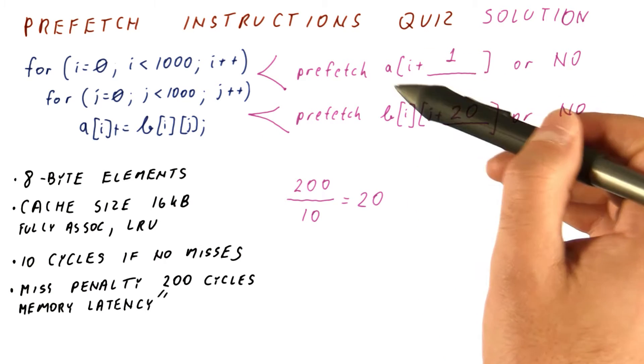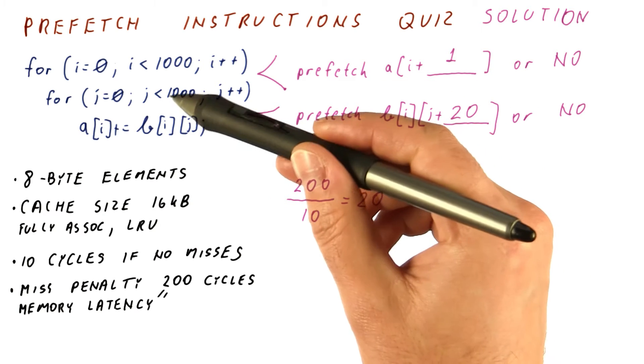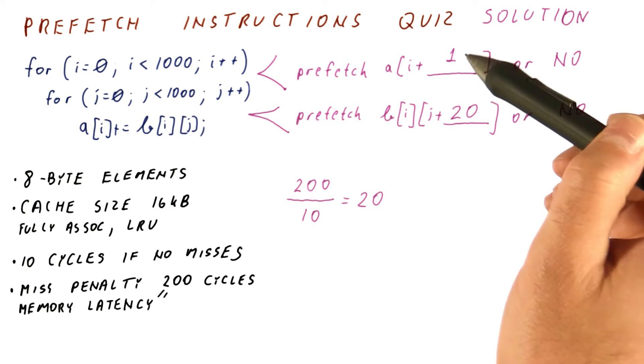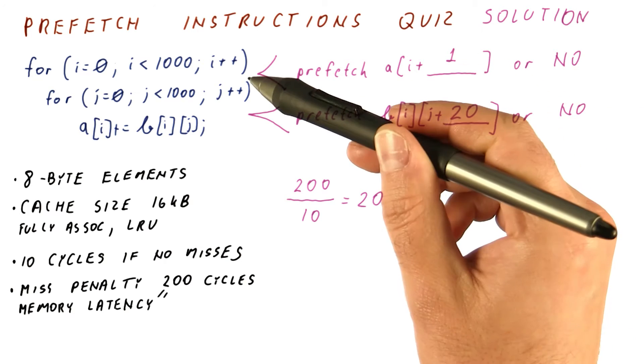If we prefetch with a distance of 1, our prefetch is done after 200 cycles. There are 10,000 cycles here, so it's in time to be accessed in the next iteration of the outer loop.